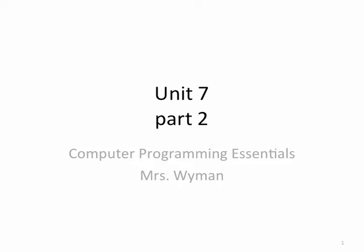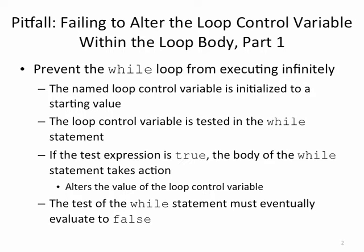Computer Programming Essentials, Unit 7, Part 2. One pitfall when writing loops is failing to alter the loop control variable within the loop. We saw an example of this in the previous part, and it causes an infinite loop. We don't want to have an infinite loop. We probably will write one, and then you'll join the super secret club of infinite loop writers - welcome. We all do it from time to time, but it's not something we seek. To prevent a while loop from executing infinitely, we must alter the loop control variable inside the loop.